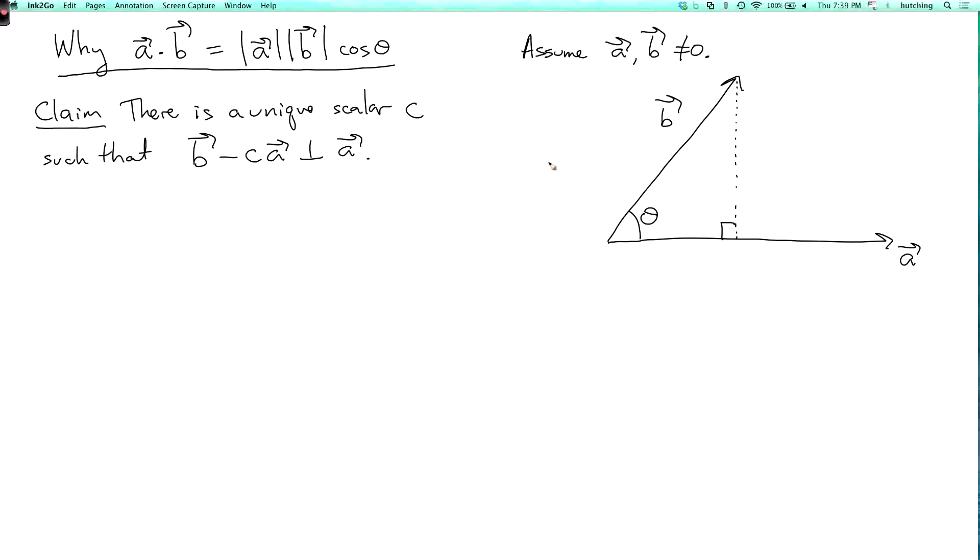So in the picture here, this piece of a, this is c times a. And then this dotted line, if I make it into a vector going up in the picture, then this vector is b minus c a. And I want this vector to be perpendicular to a.